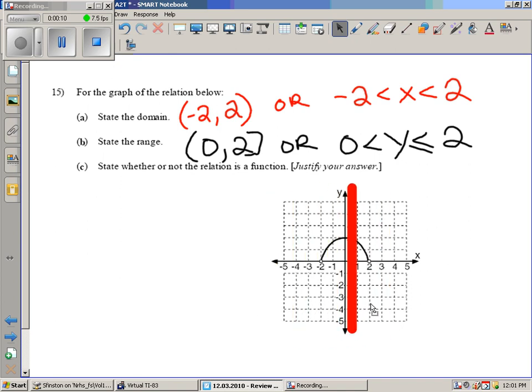State whether or not the relation is a function and justify your answer. Something is a function if it passes the vertical line test and this passes the vertical line test. So here's what you'd say.